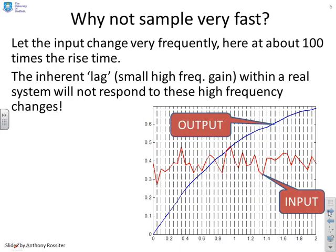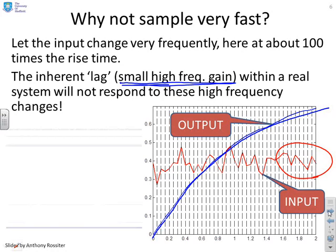Why don't we sample faster then? Well, this is the problem if you sample too fast. You can see here I've drawn an input which is changing very, very fast. But if you look at the corresponding output signal, you can't really see the impact of all these changes in the input. And why is that? Because real systems have essentially got a small gain at high frequencies. So if you bounce the input up and down very fast, it'll get basically filtered out and you won't see it on the output. So there's no point changing the input very, very fast.